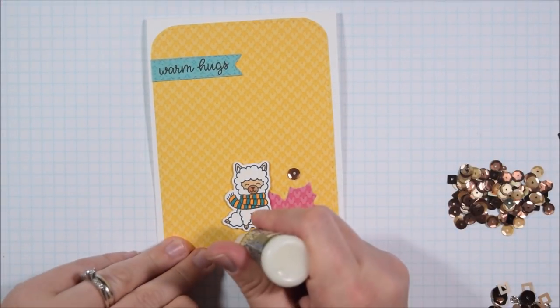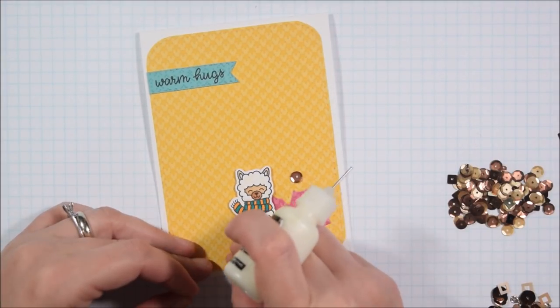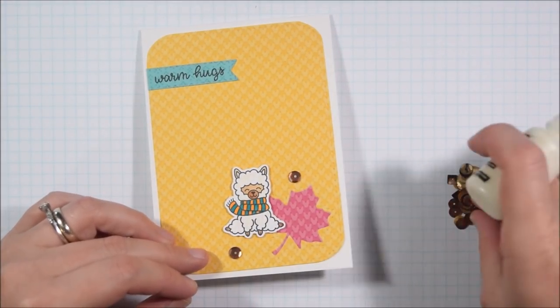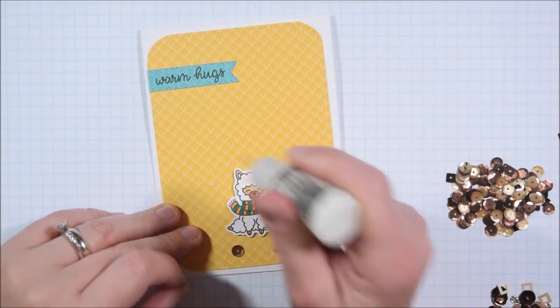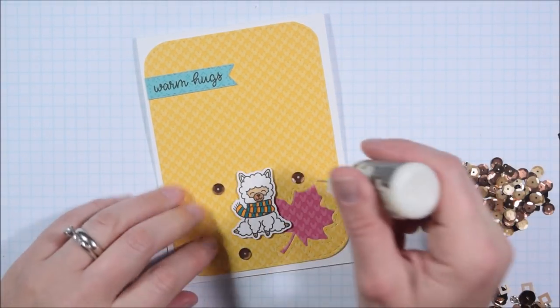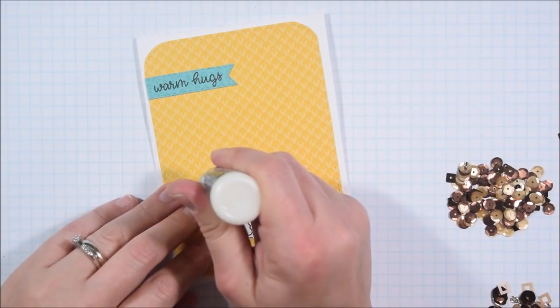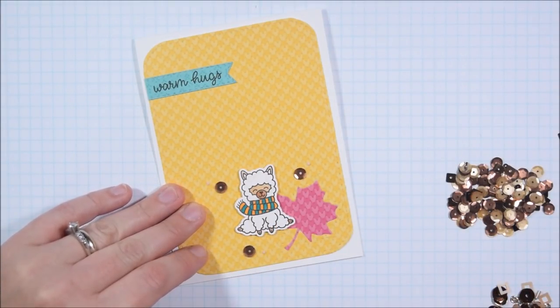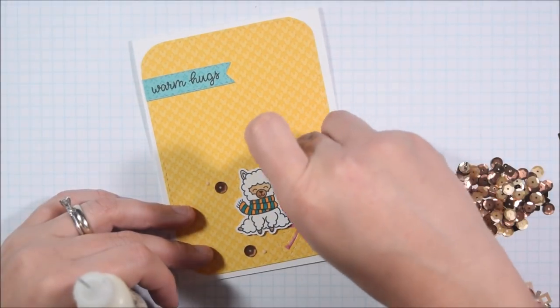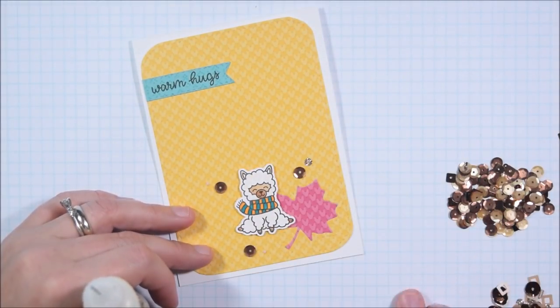Ready to finish off the card, I decided to go with some sequins from Cat Scrappiness because they're super fun and it would just make the card feel sparkly and special. So I'm choosing some big brown sequins from the truffle mix and some tiny gold glitter sequins from the Manhattan mix.